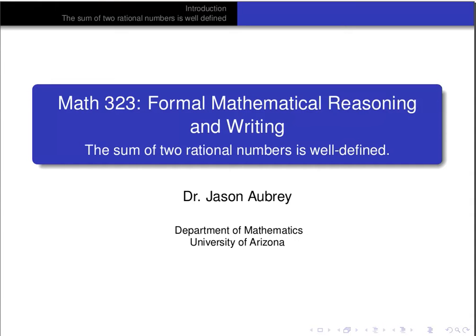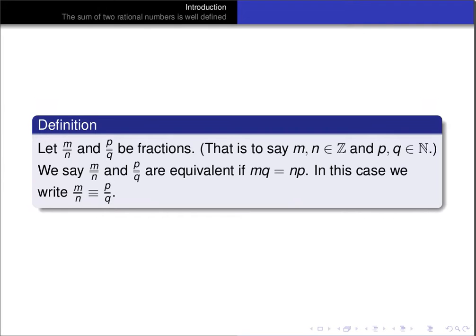In this video we'll prove that the sum of two rational numbers is well defined. Let's review our construction of the rational numbers. Recall that we begin by distinguishing fractions from rational numbers. A fraction is an actual ratio of an integer and a natural number. We'll distinguish them from rational numbers by writing fractions with the double bar between the numerator and denominator. We let m over n and p over q be fractions, and we say those are equivalent fractions if m times q is equal to n times p. In that case we write m over n is equivalent to p over q using the triple equal sign.